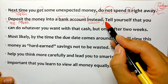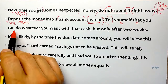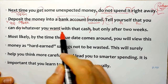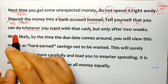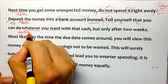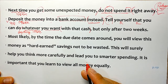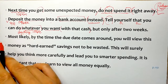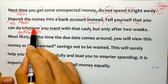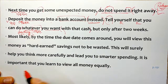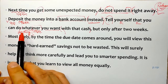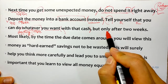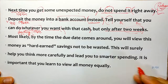tell yourself that - 말해줘라 너에게, you can do whatever you want with that cash - 당신이 원하는 것은 그 돈으로 무엇이든 할 수 있다고. whatever는 anything that의 뜻입니다. ever는 any의 뜻입니다. 네가 원하는 어떤 일이든 당신이 할 수 있다고 스스로에게 말해라. but only after two weeks - 하지만 단지 2주가 지나고 나서.